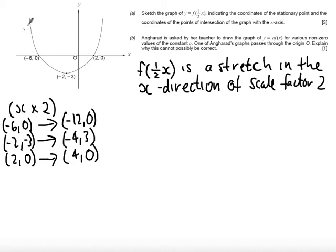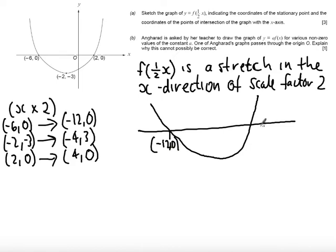Sketching the graph is simple enough. It's the same shape. Remember, it's a sketch. It's still going to cut the x-axis in two places - at (-12, 0) and at (4, 0). The y-axis must be between. Then we get our minimum point here, which we call (-4, 3). And that is the sketch of our graph complete.